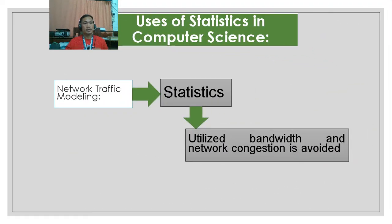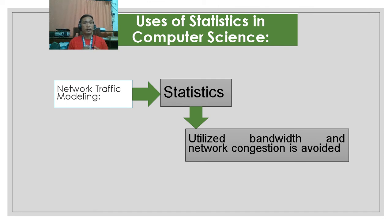Another use of statistics is network traffic modeling. In network traffic modeling, they use statistics to eliminate network congestions. Using bandwidth, they determine and eliminate or minimize congestion — that is an important use of statistics in computer science in network traffic modeling.